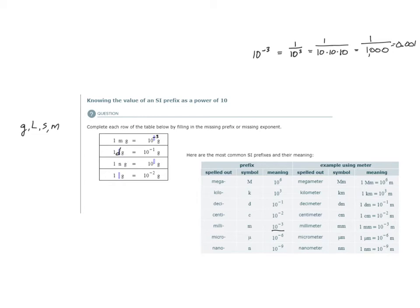Row 3: 1 nanogram is equal to how many grams? What is the meaning of nano? The meaning of nano is 10 to the minus 9. That means a nanogram is a billion times smaller than a gram. So how many grams is 1 nanogram? The meaning of nano — 10 to the minus 9.